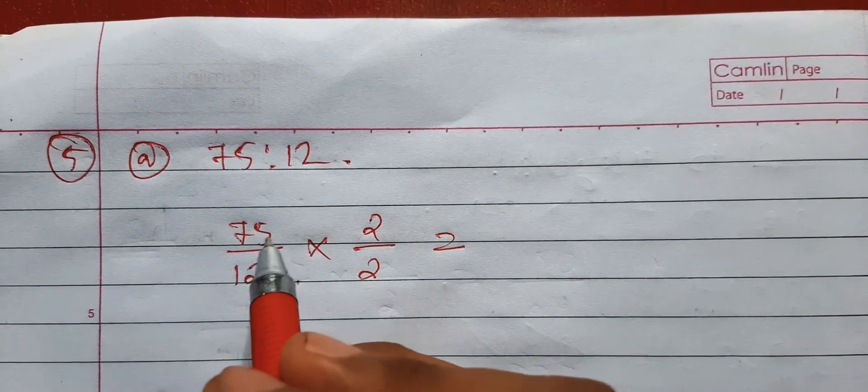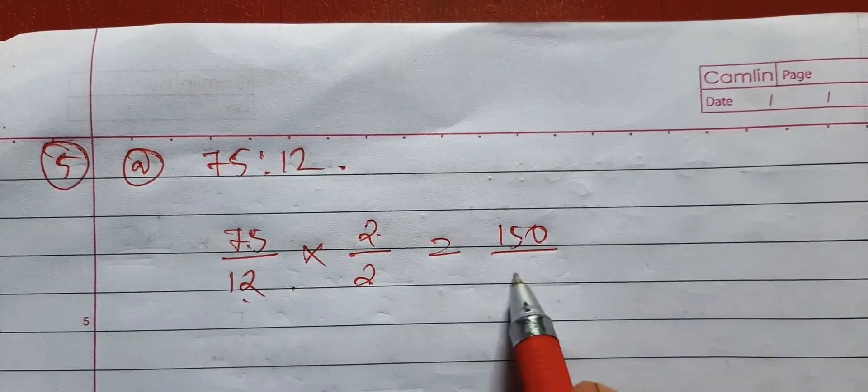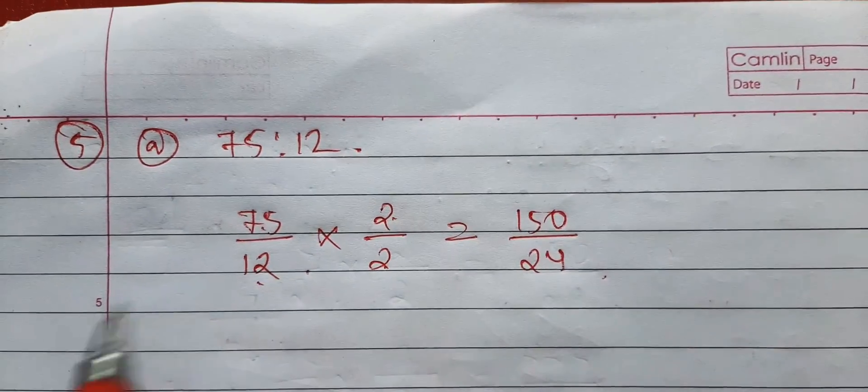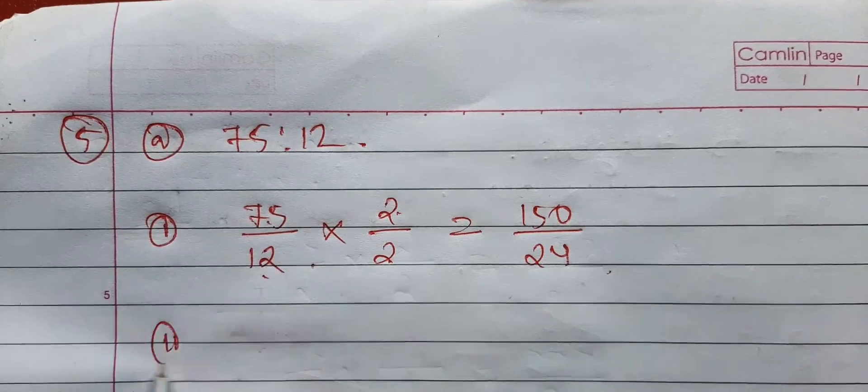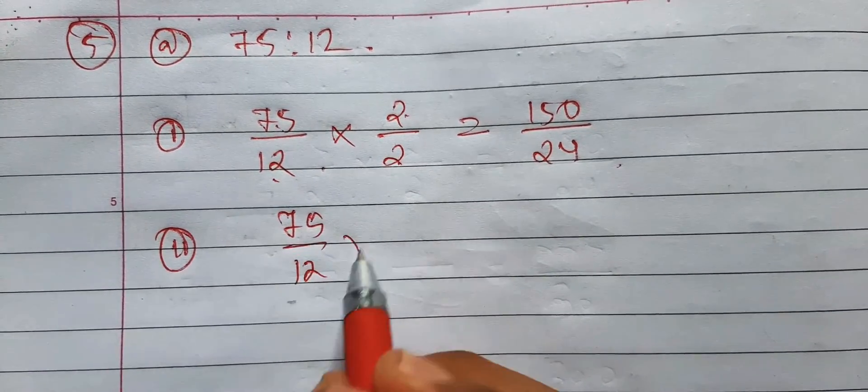So here 75 into 2 is 150, and then 12 into 2 is 24. Now this is one. Now we're going to find two, so 75 by 12.